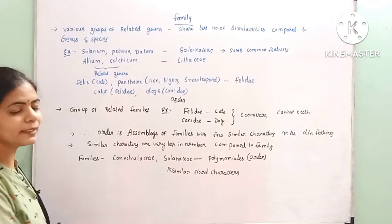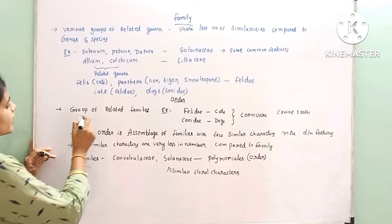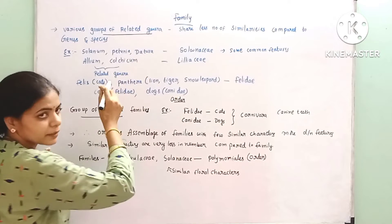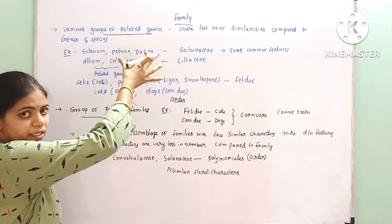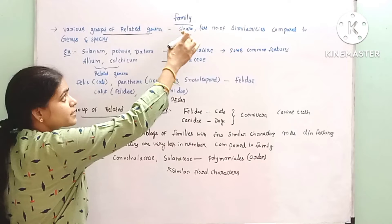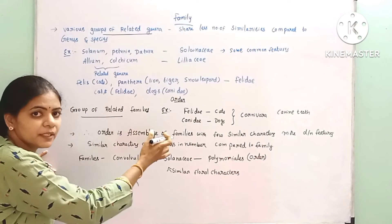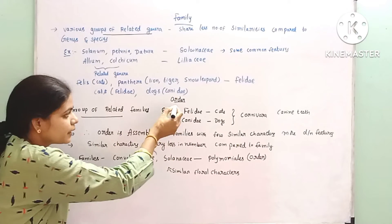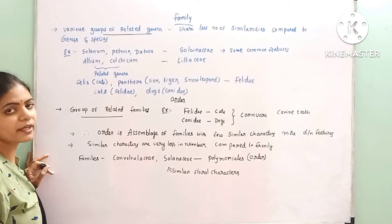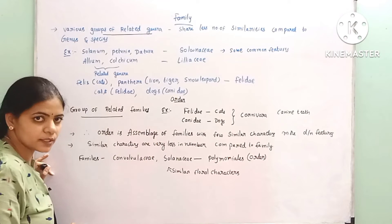Next is order. Order is a group of related families. Different related genera combine to form a family, and when related families are combined, we get an order. Group of related families is called order.